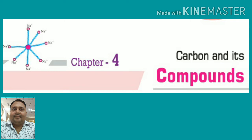Hello students, welcome to online class. Let's start chapter number four: Carbon and Its Compounds. In this chapter we discussed how carbon always forms covalent bonds, how carbon attains noble gas configuration, and the formation of single, double, and triple bonds between molecules of hydrogen, oxygen, and nitrogen. We also discussed the physical properties of covalent bonds and the versatile nature of carbon.